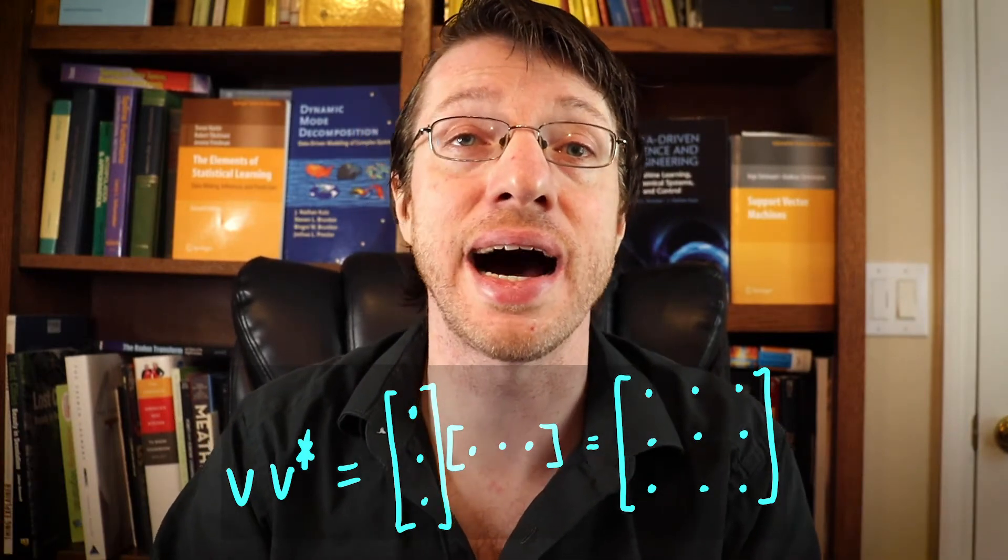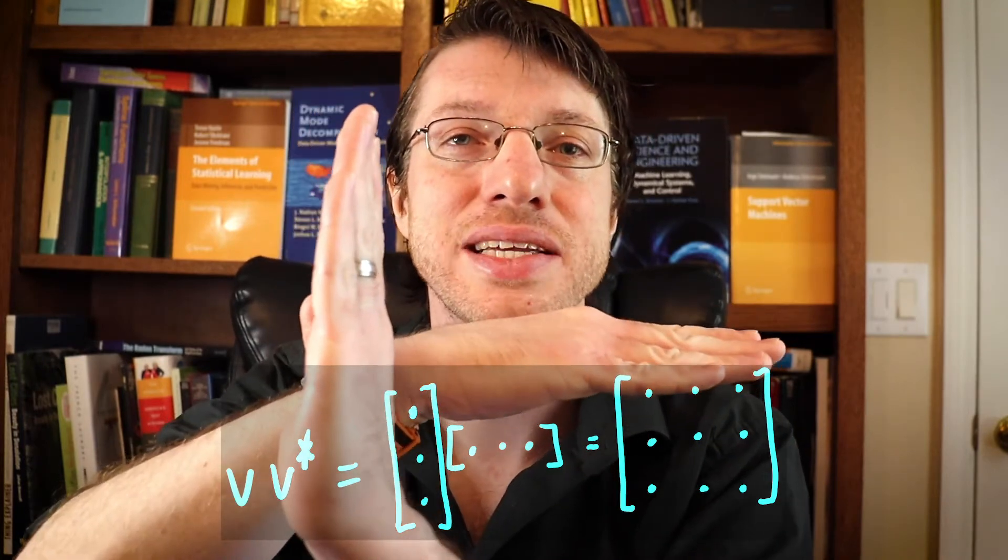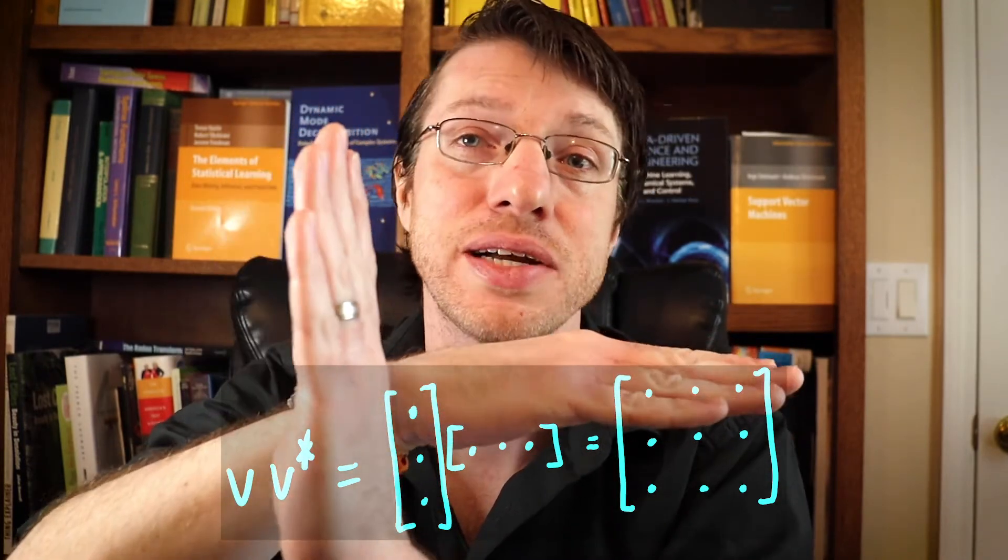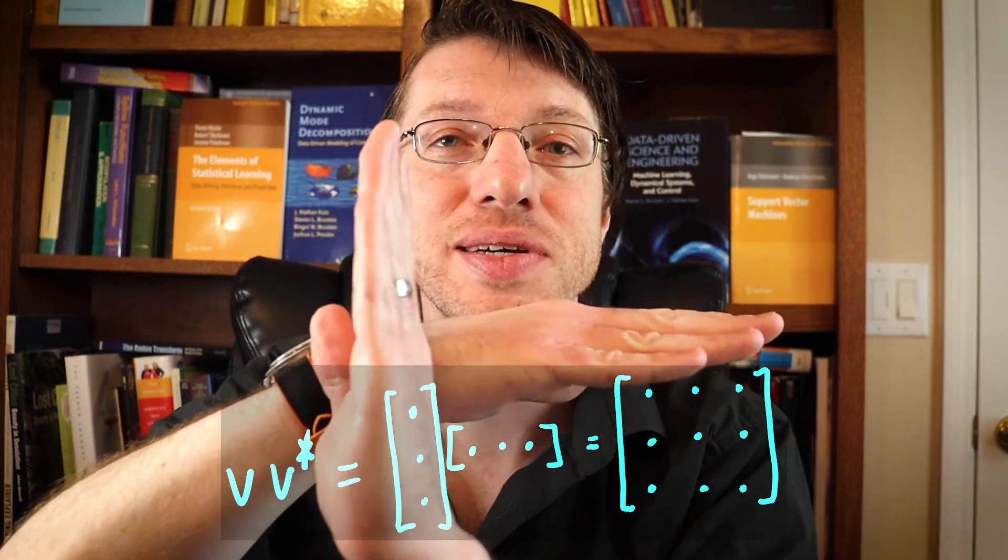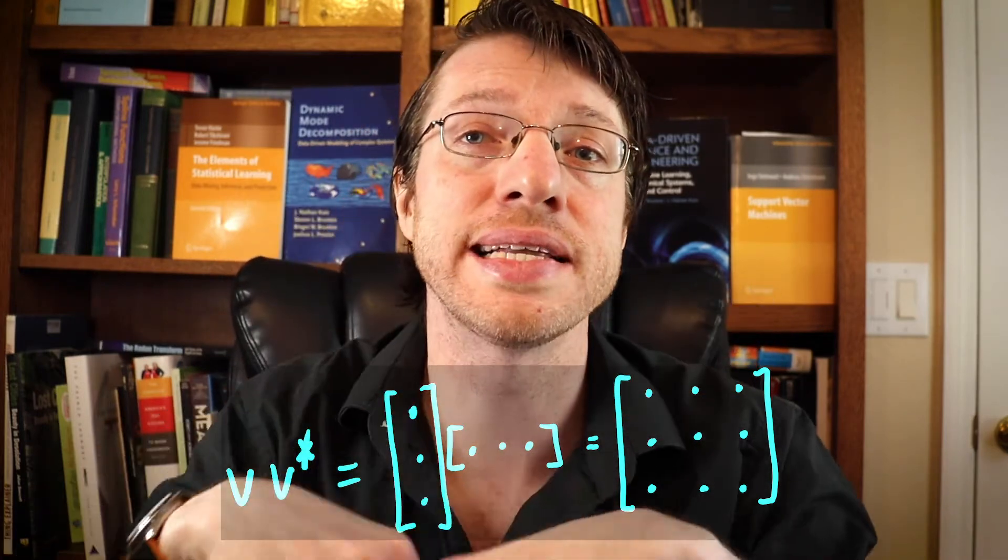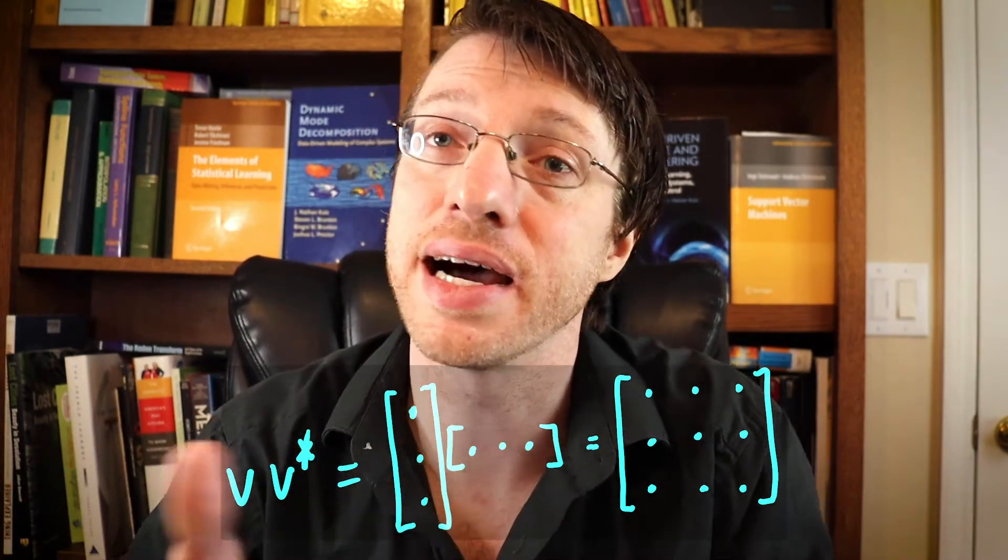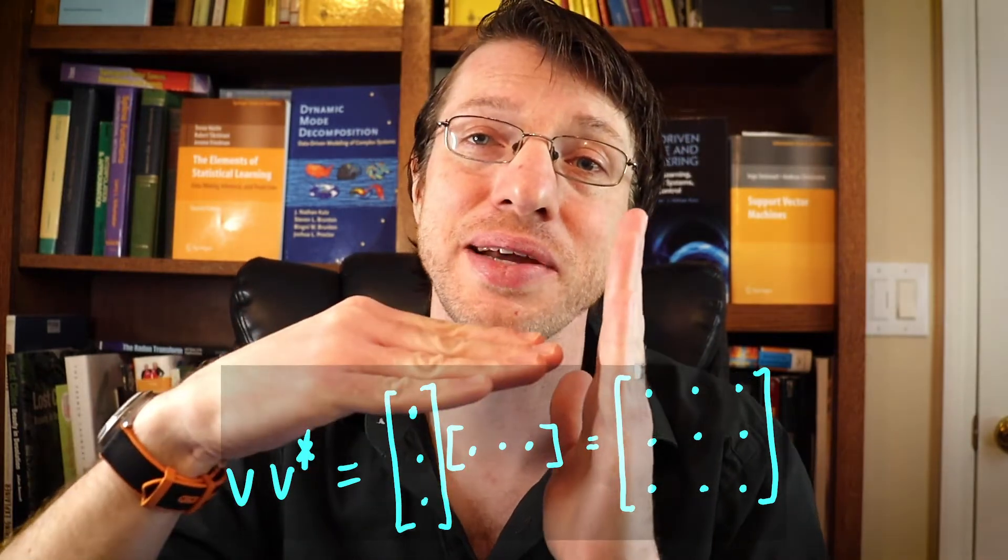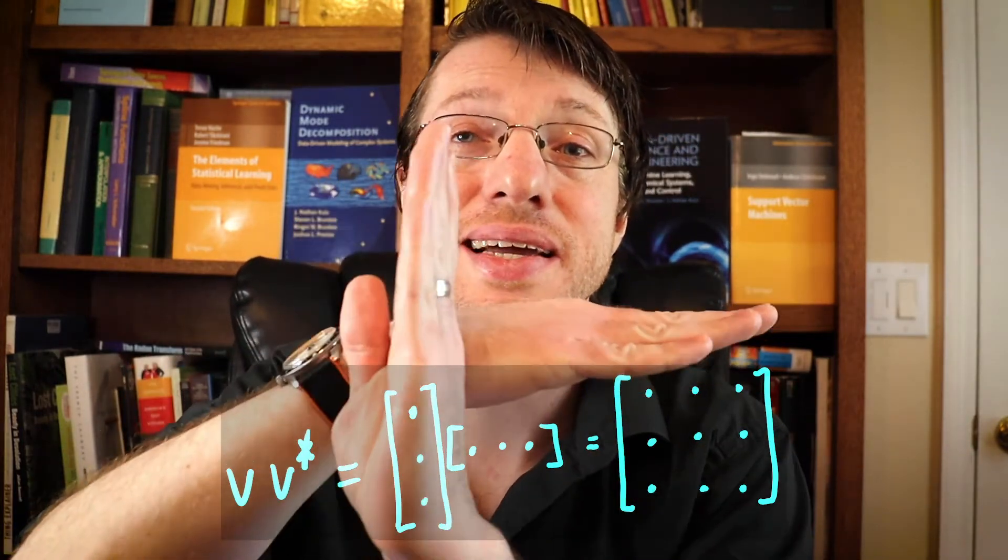So what you do is you take an eigenvector, and that's a column, and you multiply it by its conjugate transpose, and this product ends up giving you a matrix. Not if you did it the other way around, it would give you a scalar, and this way it gives you a matrix.